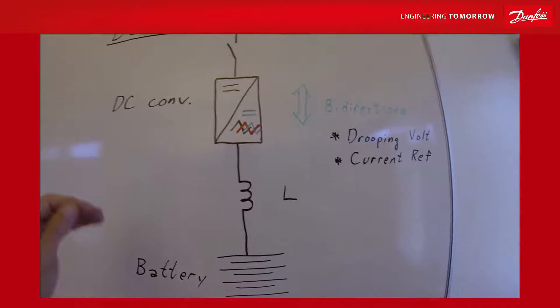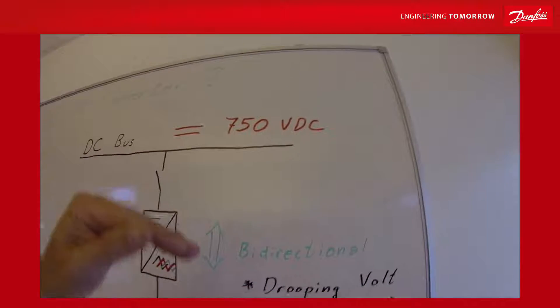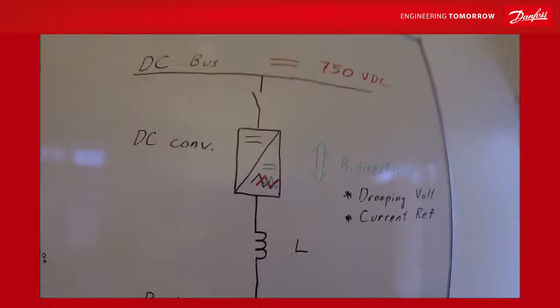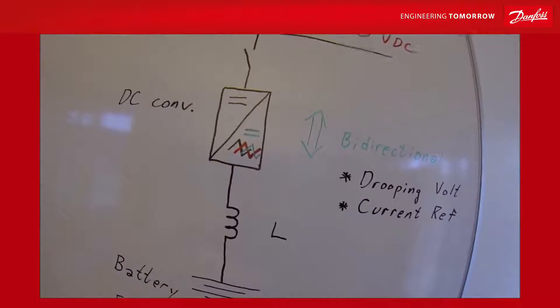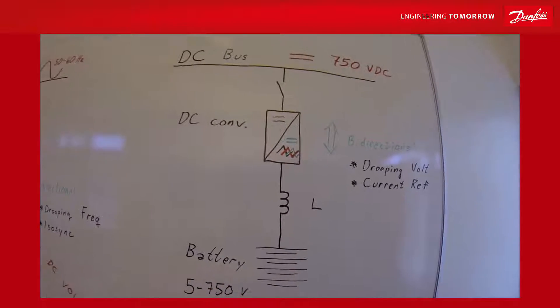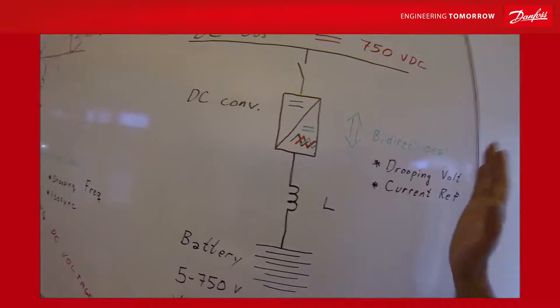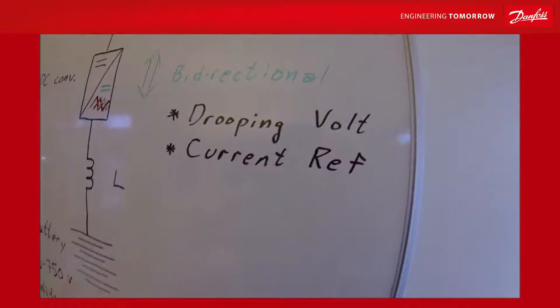That means when the current is bigger then you reduce the voltage a little bit and then it will take off the load. So you adjust the drooping to be the same as other energy producers on the grid and then you will have the same drooping profile. It's just like paralleling active front end. So drooping is an easy way of sharing the load with other producers.